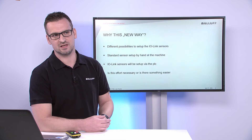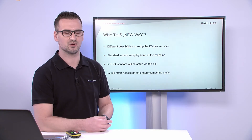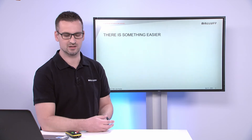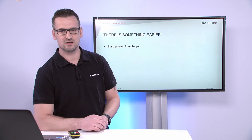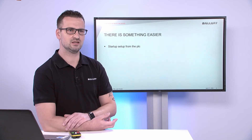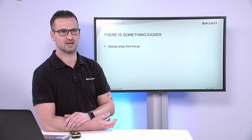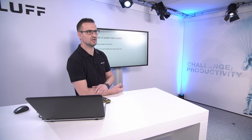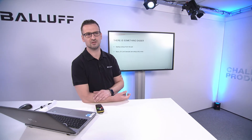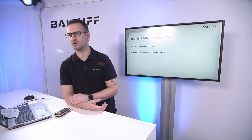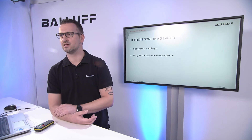You might ask: is it really necessary to use new software or different function blocks? We say there is something easier. We call it startup setup from the PLC. That means every PLC startup, when you power on your machine, you have the possibility to parameterize the sensors with a ground setup and then start working. A large number of IO-Link sensors are only parameterized once and don't change during the working process of the machine.